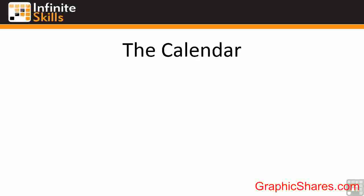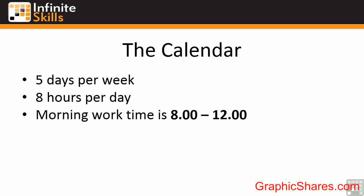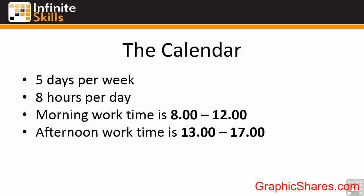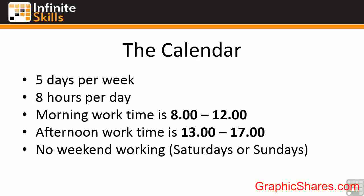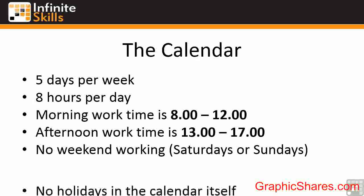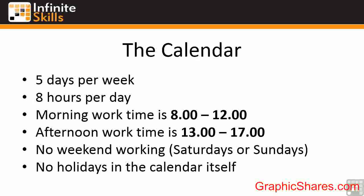The calendar in Microsoft Project 2013 has a number of prebuilt defaults. The main one is that everybody on your project works five days a week, Monday to Friday, eight hours per day — morning from eight to twelve, an hour's lunch, then one to five. These are the predefined defaults but they are changeable through the software. No weekend working is included in the calendar, though we can add that. None of the bank holidays are included either, and that's an important item to remember to add — all the public holidays that could make a difference to how long your project will take.